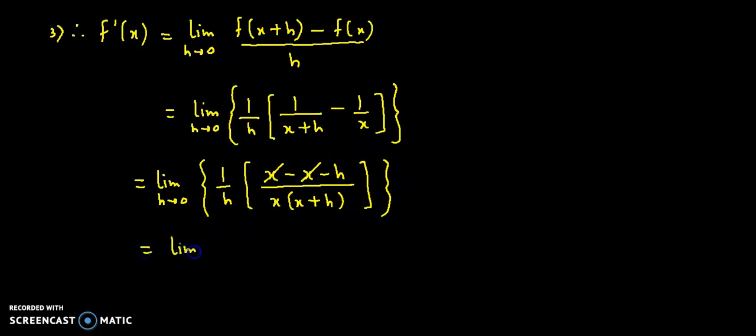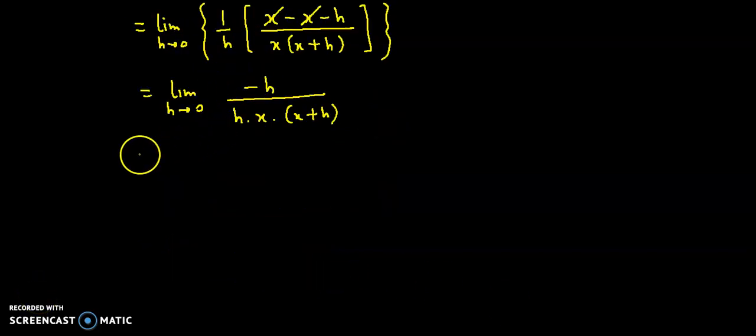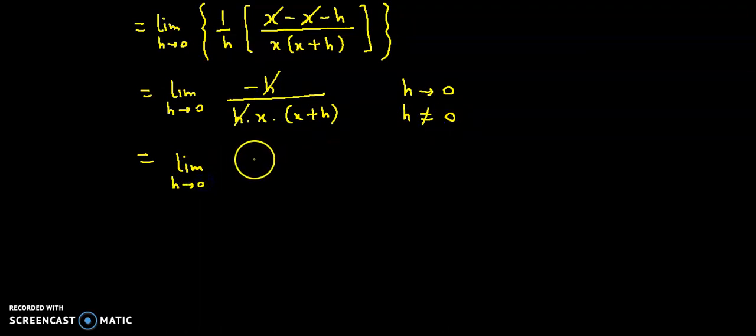So we have limit as h approaches 0. Upar rahe gaya minus h aur niche ye 3 terms hain hamare minus h into x into x plus h. Ab ismein se bhi hum h ko cancel out kar sakte hain. So ye h aur ye h cancel kar sakte hain, reason h approaches 0 and hence h is not equal to 0. So we have limit as h approaches 0, aur term rahe gaya minus 1 upon x into x plus h.